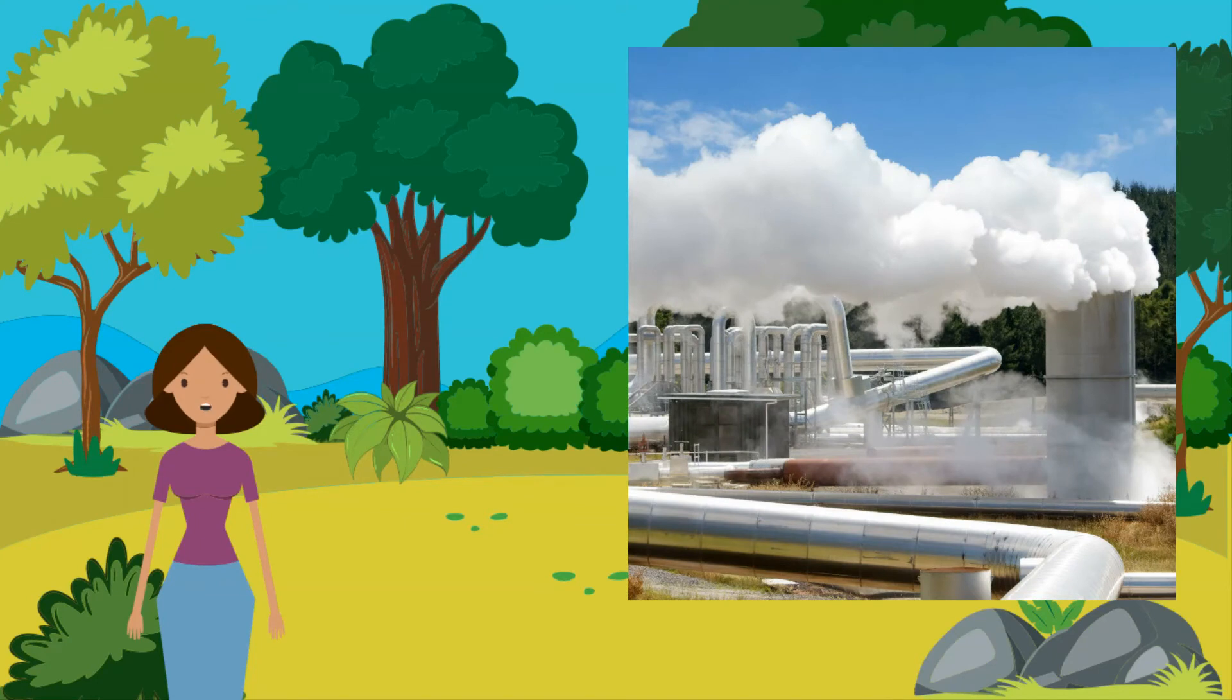Geothermal: in volcanic regions it is possible to use the natural heat of the earth. Cold water is pumped underground and comes out as steam. Steam can be used for heating or to power turbines creating electricity. This is potentially an infinite energy supply. It is used successfully in countries such as New Zealand and Iceland. It can be expensive to set up and only works in areas of volcanic activity. Dangerous elements found underground must be disposed of carefully.